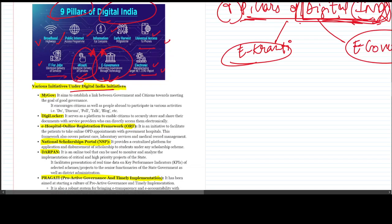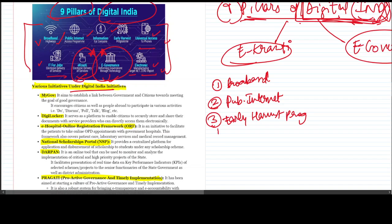Digital India has nine pillars which the government defined. The first was broadband connectivity to every home. Second was public internet. Third initiative was early harvest program. Fourth was universal access to information.